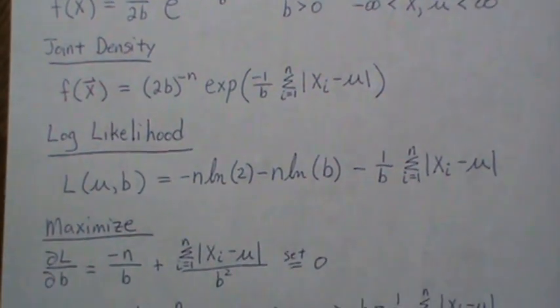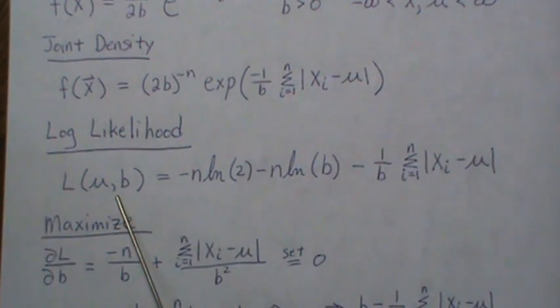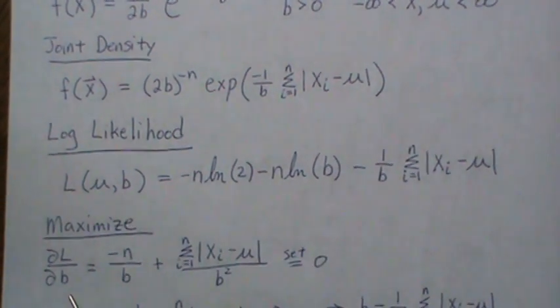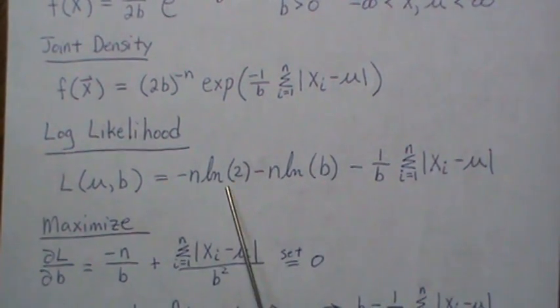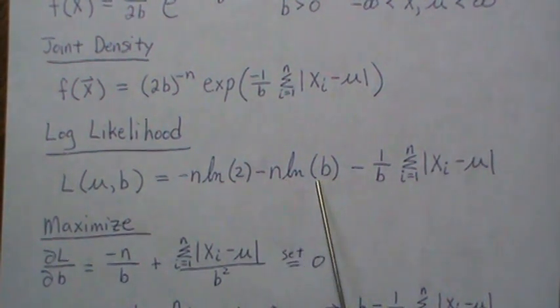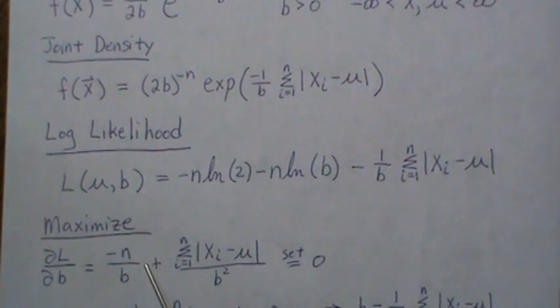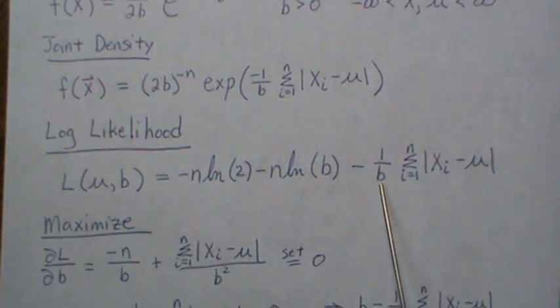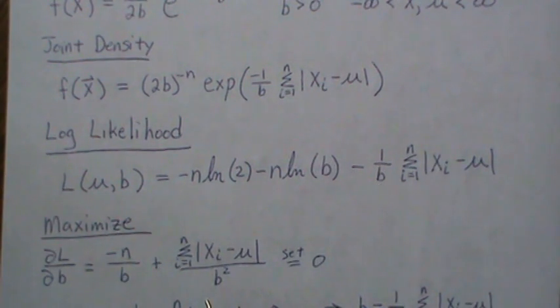Next we take the partial derivative of our log likelihood with respect to B. So this is constant, goes away. Here it's minus n over B, and here you end up getting a minus 1 over B squared, so then that makes that a plus, and that's a constant, so it stays the same.